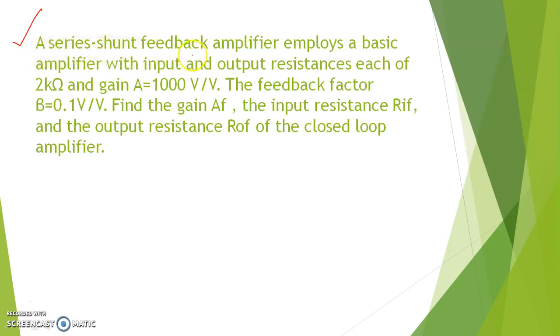A series shunt feedback amplifier employs a basic amplifier with input and output resistances each of 2 kΩ. That means, for basic amplifier block, both the input and output resistance are 2 kΩ and gain A equal to 1000 V/V. The unit is volt per volt. That means, output is in voltage and input is also in voltage. So basically, we are giving the input as some voltage value and we are also getting the voltage value. So basically, this amplifier is nothing but voltage amplifier.